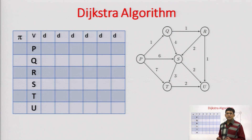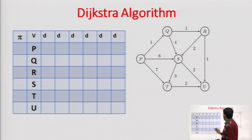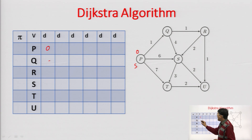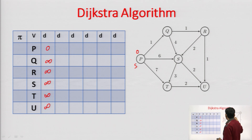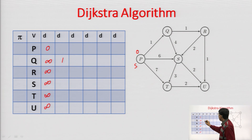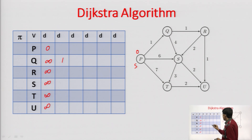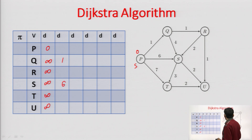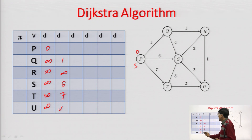Let us take another example to understand this process again. We define the source as P, set its distance to 0, and all others to infinite. From vertex P, we look at all outgoing edges: P to Q, P to S, P to T. P to Q gives distance 1 (0+1); P to S gives 6 (0+6), which is less than infinite; P to T gives 7 (0+7). The rest remain infinite. All vertices updated through P will have P as their predecessor.